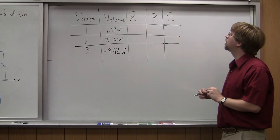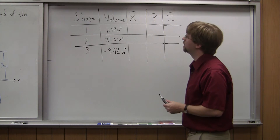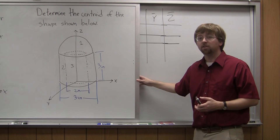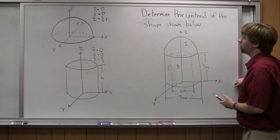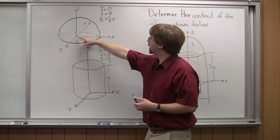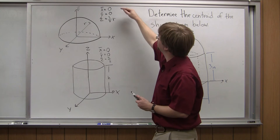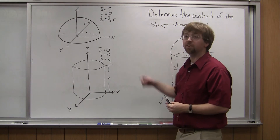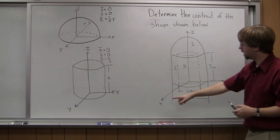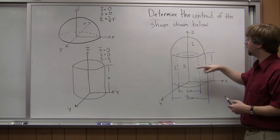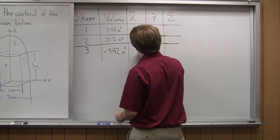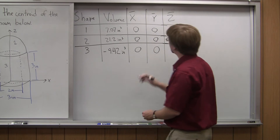Now I need to find x̄, ȳ, and z̄ for each of my pieces. I'll look at the centroid tables. For the hemisphere, the centroid is right down the center along the z-axis, so x̄ equals zero and ȳ equals zero. Same thing for the cylinders. Since everything is centered on my z-axis, the x̄ and ȳ values for the hemisphere and both cylinders are all equal to zero. That makes things pretty easy.